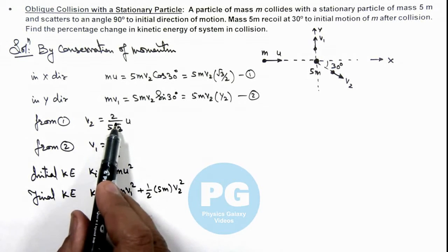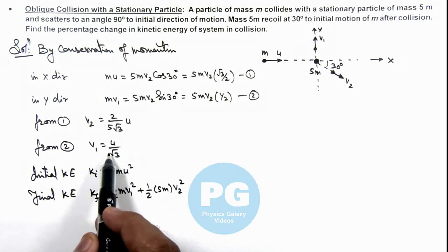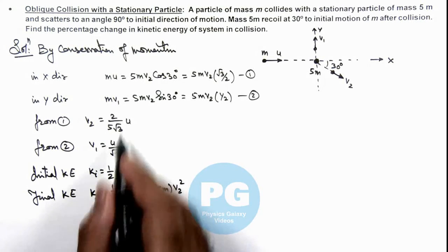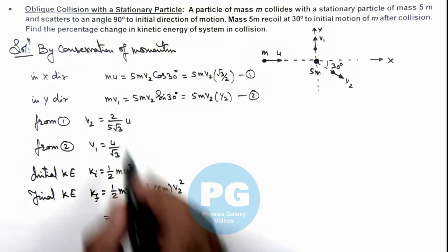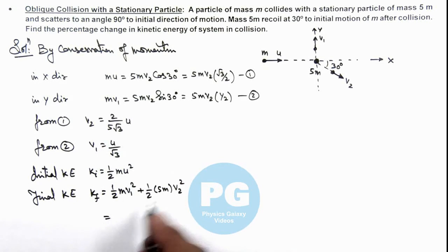So if we substitute the values of v1 and v2 here and simplify, I am leaving the calculation part for you. When you substitute the value of v2 and v1 here and simplify, this will result in (3/10)m·u².